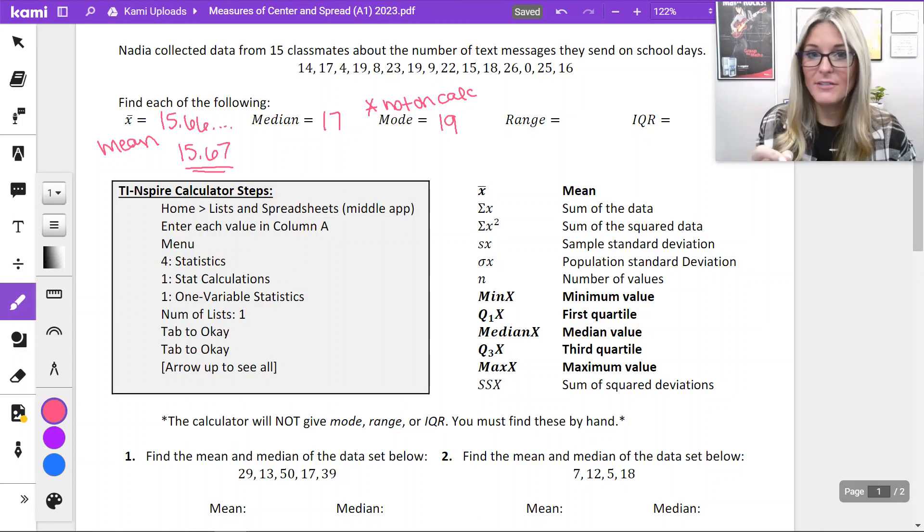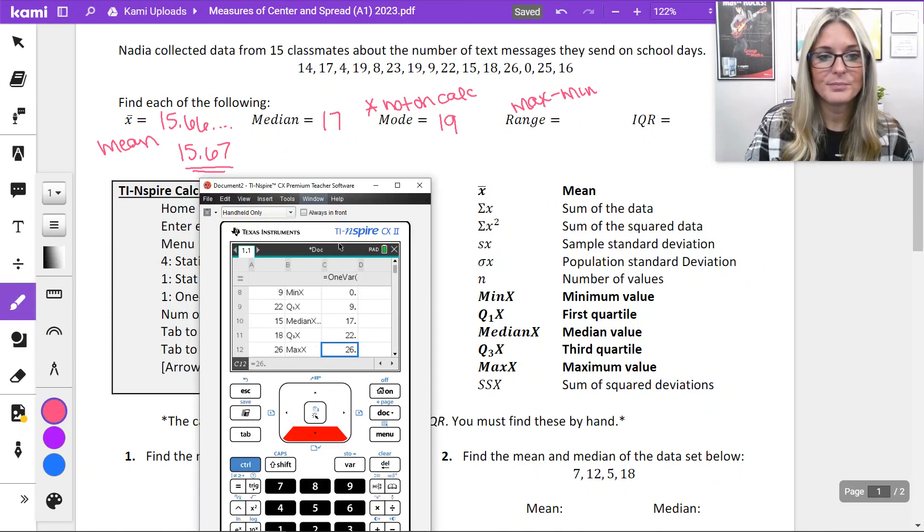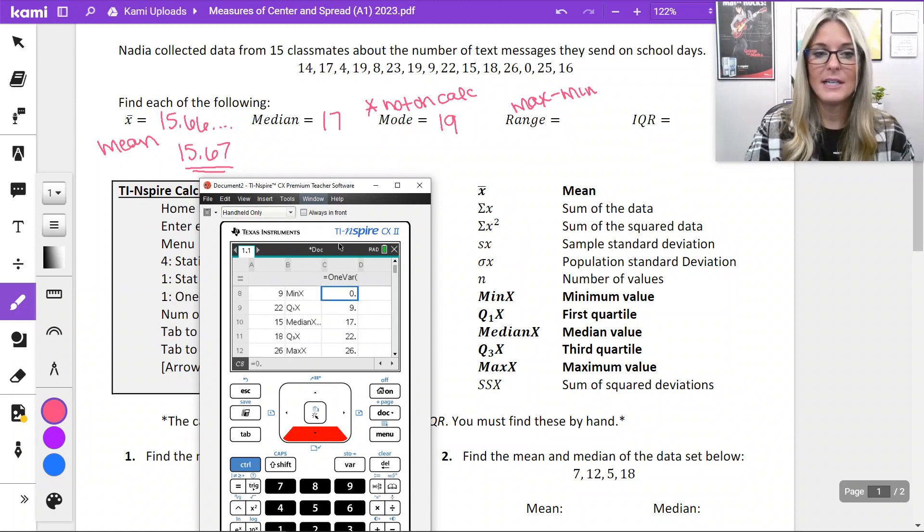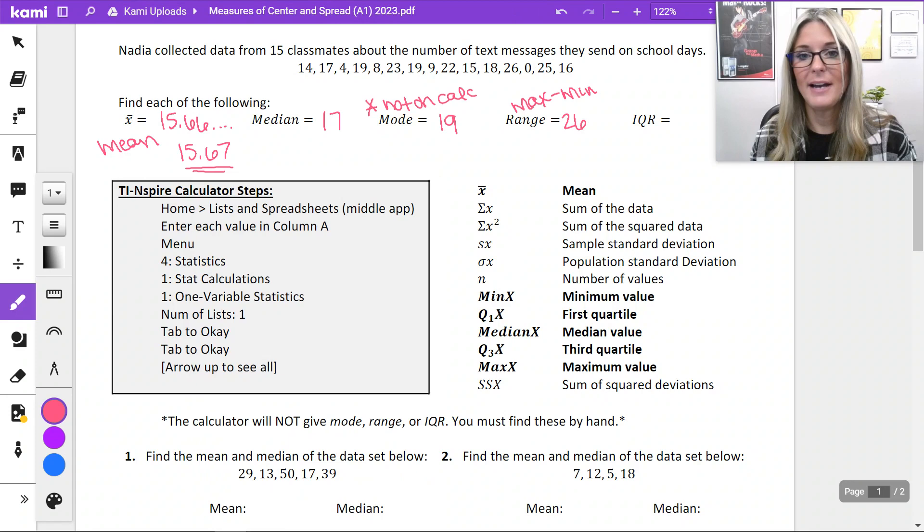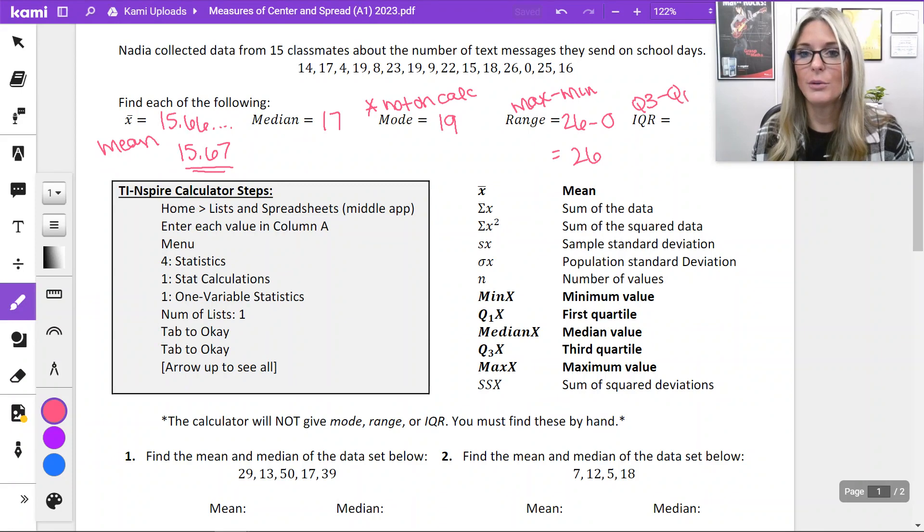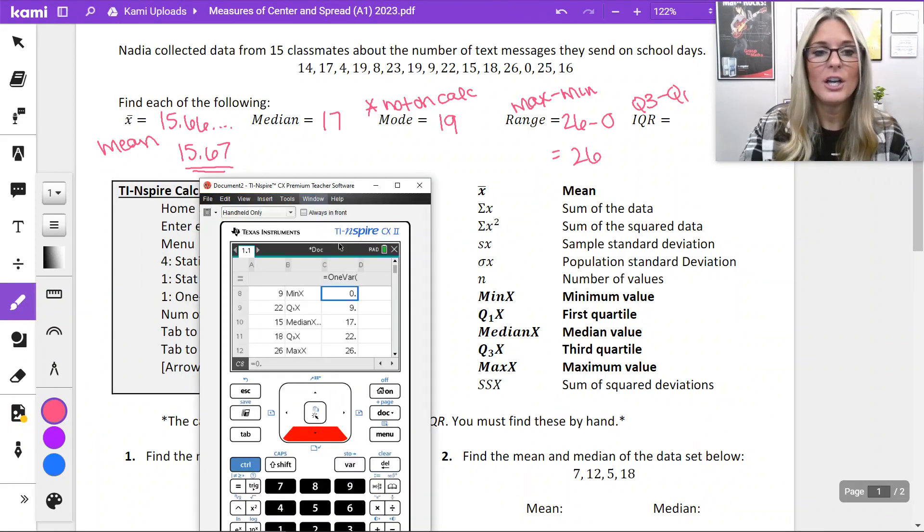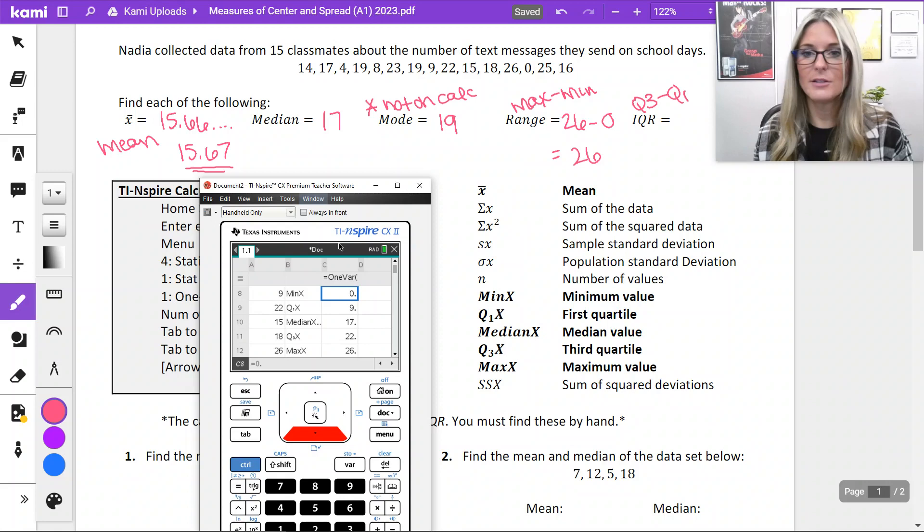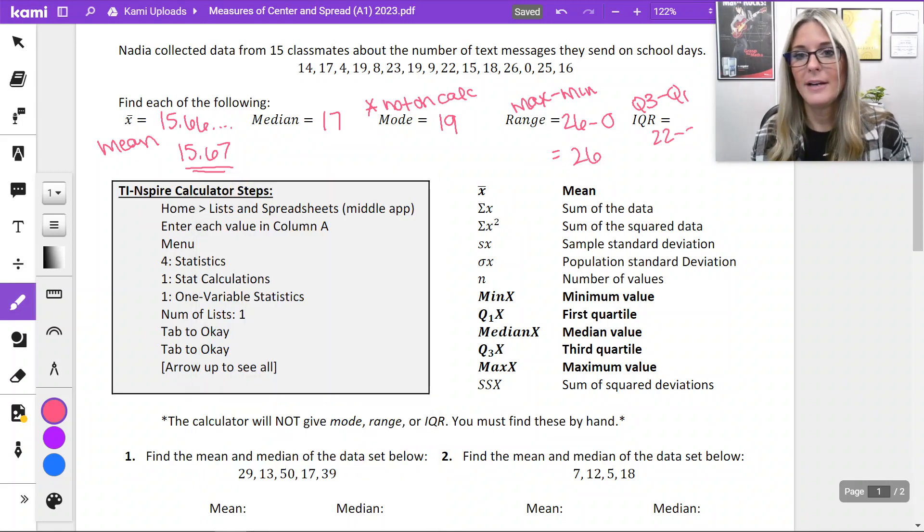Range is not specifically given on our calculator. We just need to find that maximum and subtract our minimum. Our maximum is towards the bottom 26. And leaving it here on the screen, you can see the minimum is zero. So it's 26 minus zero, it means our range is 26. Same with IQR. It is not specifically on our calculator, but we can find that Q3 and subtract it with Q1. Q3 was 22. Q1 is 9. So I'm going to do 22 minus 9 is going to give me 13.